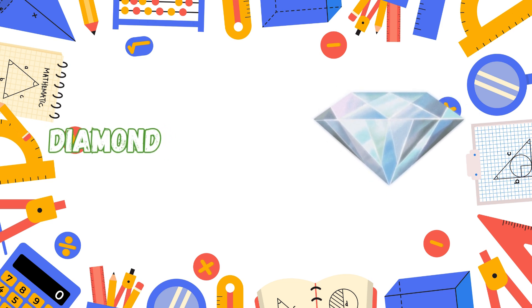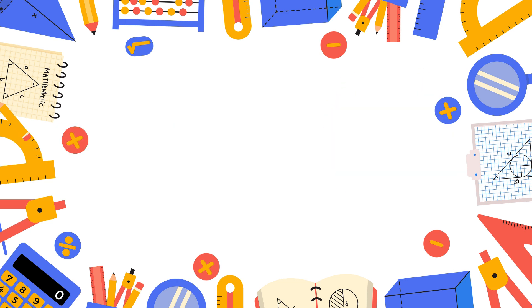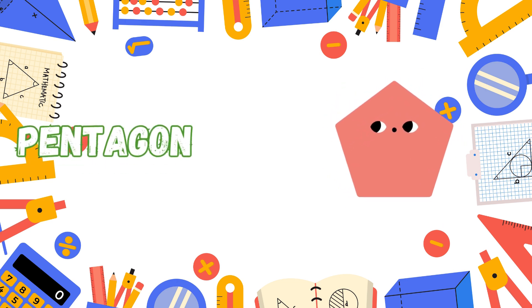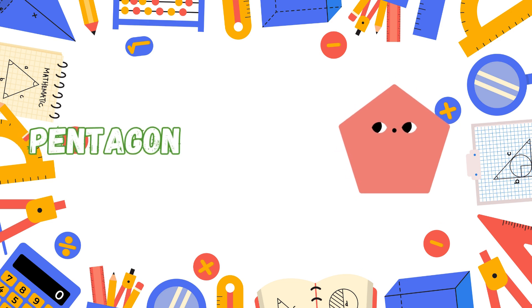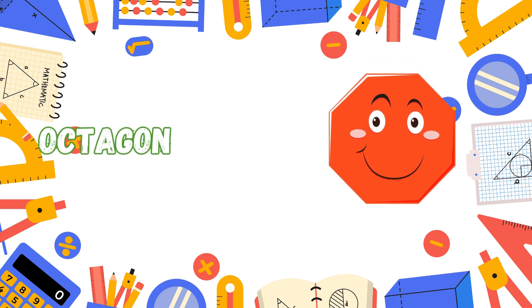Reaching the sky. Hexagon has six sides to count. Honeycombs with strength surmount. Pentagon has five sides so neat. Its shape makes buildings complete. Octagon has eight sides so strong. In stop signs, it's where you belong.